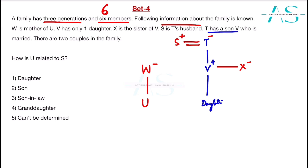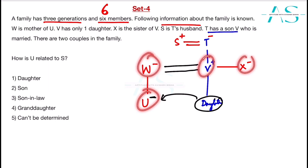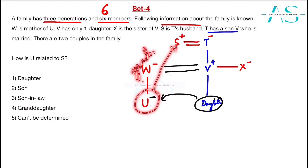The family has exactly 6 members. Counting so far: S, T, V, X, W, U — that's six. V is married to W and U is their only child, who is the daughter. Counting: 1, 2, 3, 4, 5, 6 members across 3 generations. There are two couples. U is the granddaughter of S — option 4 fits perfectly.